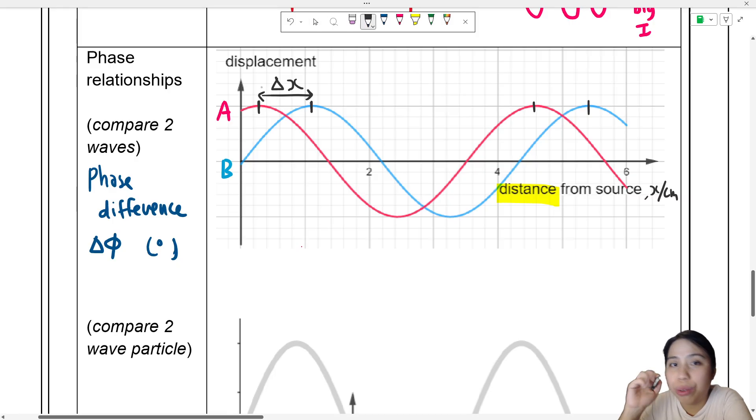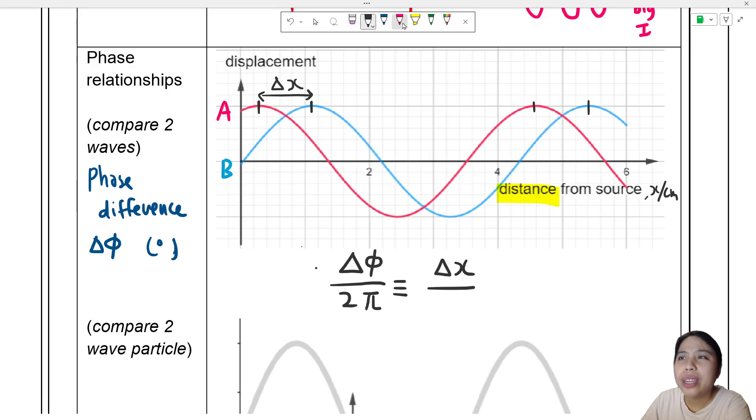So step one: we are going to do a ratio - ratio of phase difference. Let's use Δφ. What is the ratio of that tiny lag over the whole cycle? So 2π is what we use for the whole cycle. Okay, this will be equivalent to our tiny lag here in distance, and what is a full cycle in distance?